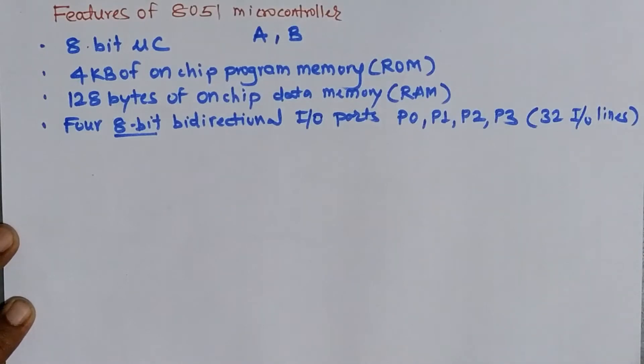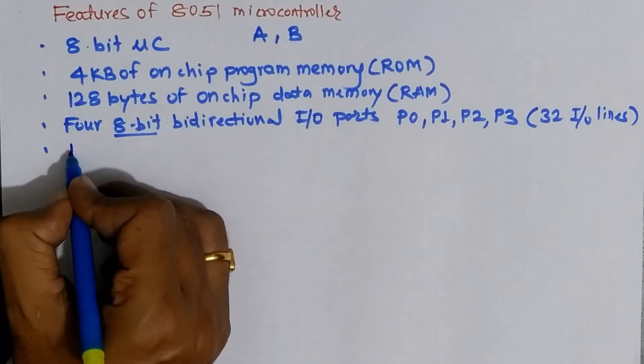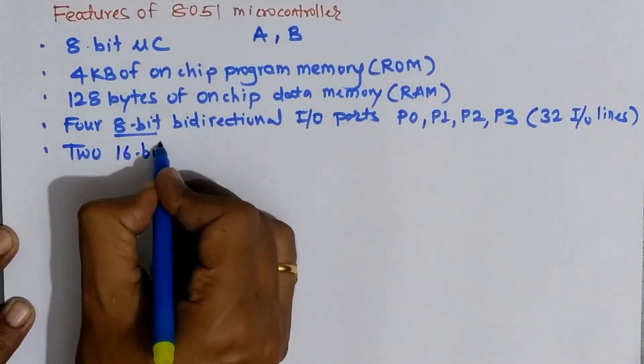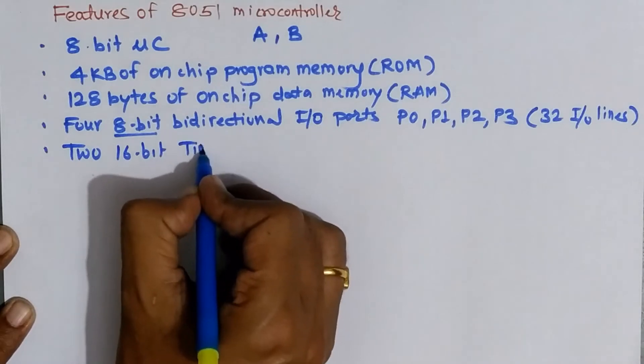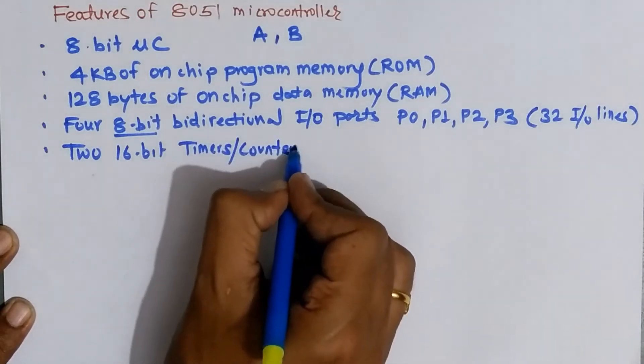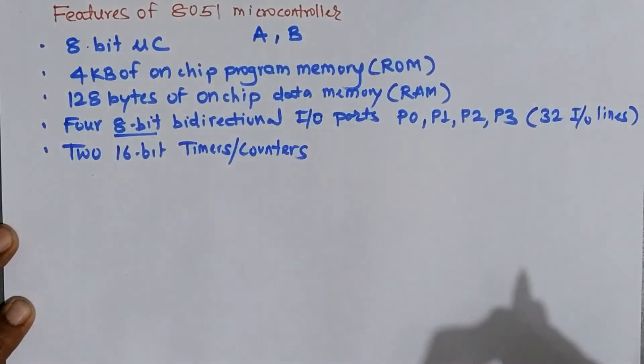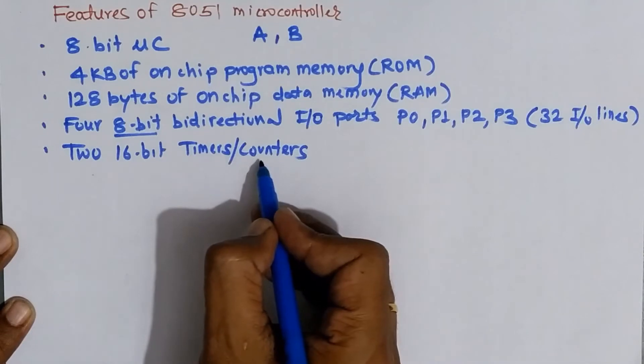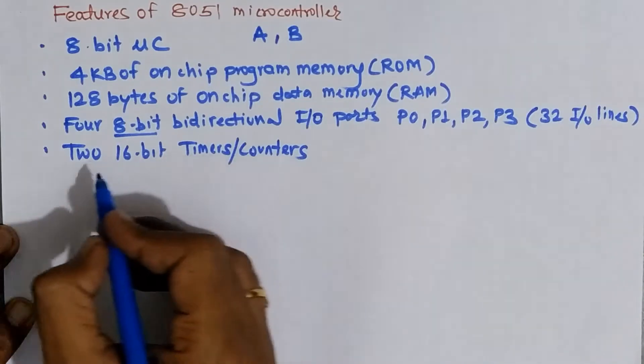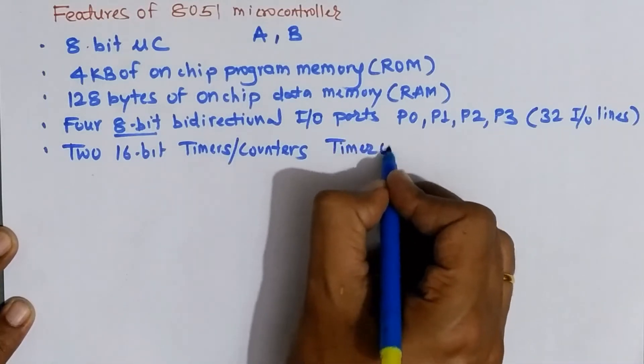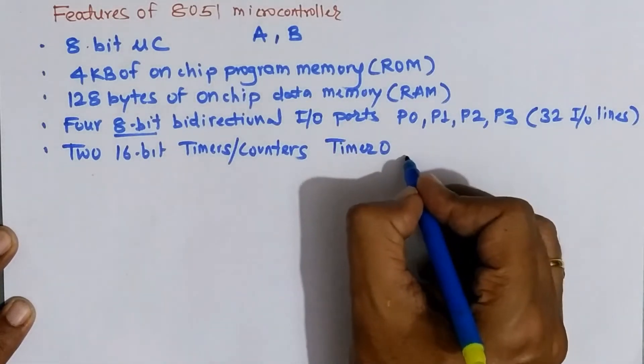One more feature is that 8051 microcontroller has two 16-bit timers/counters. So there are two different timers or counters. A timer can act as a timer or it can also act as a counter. The number of timers are two. The first timer is called as timer 0. It is of 16-bit.